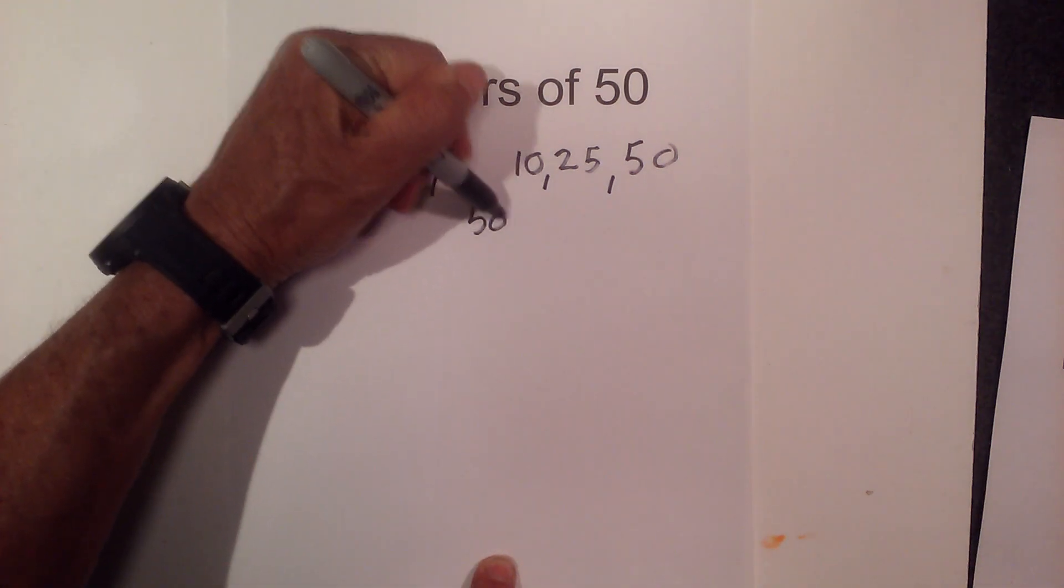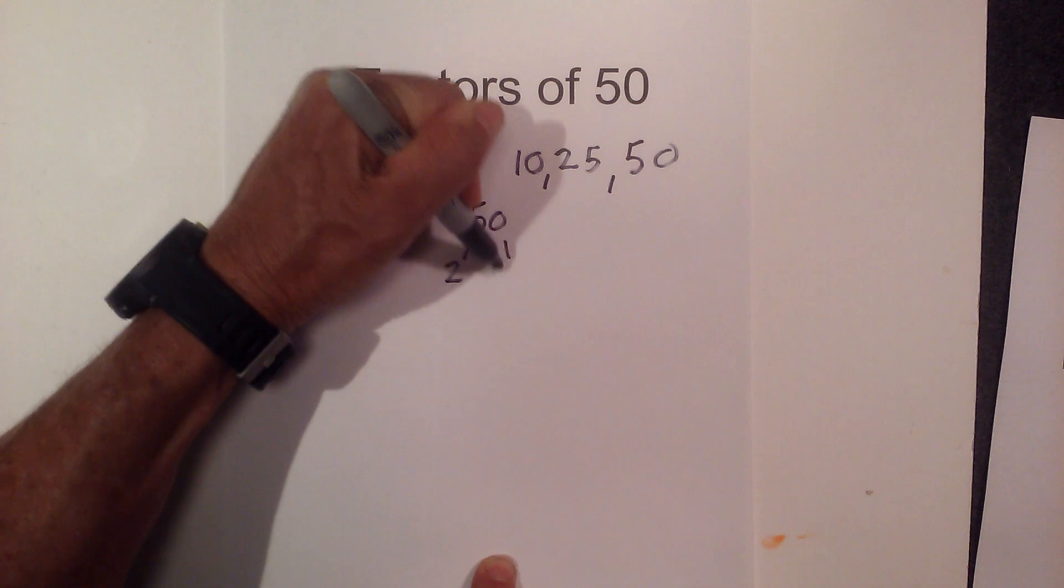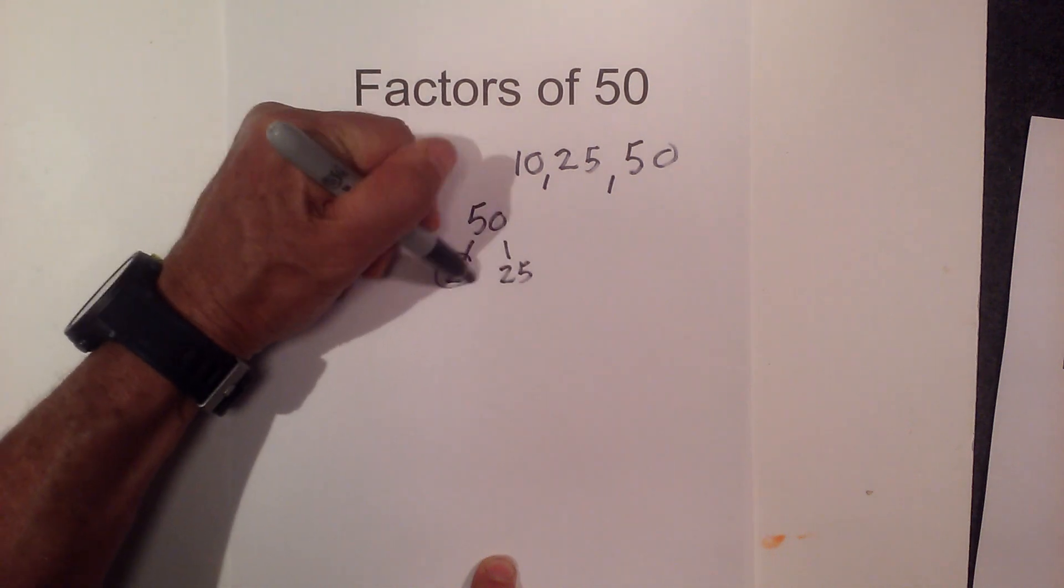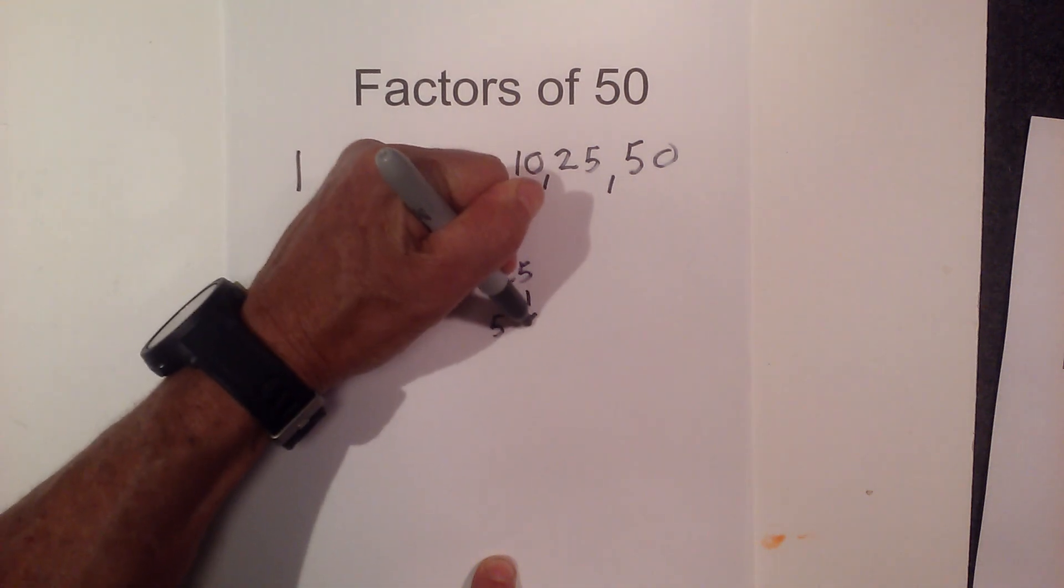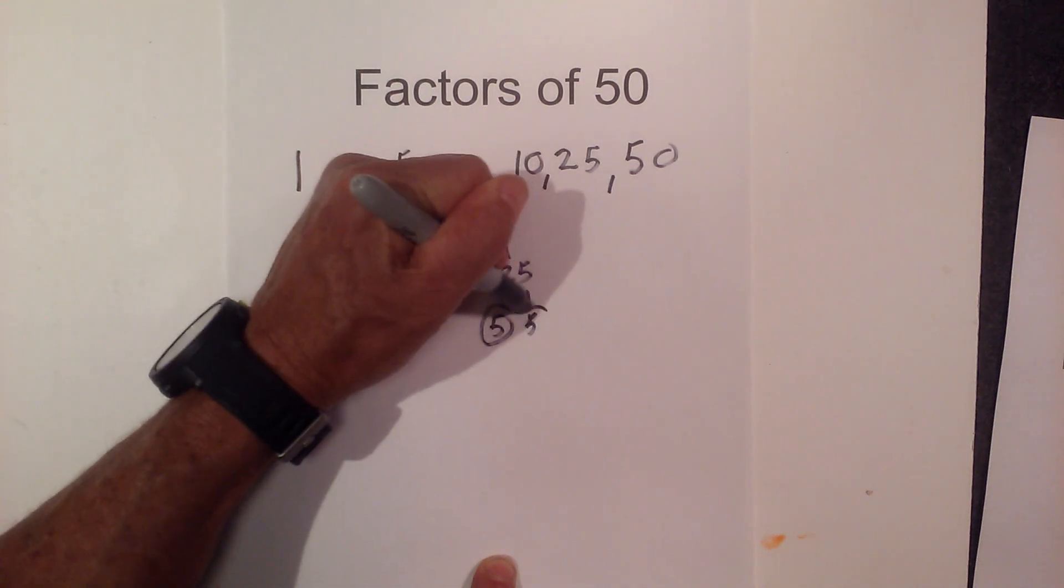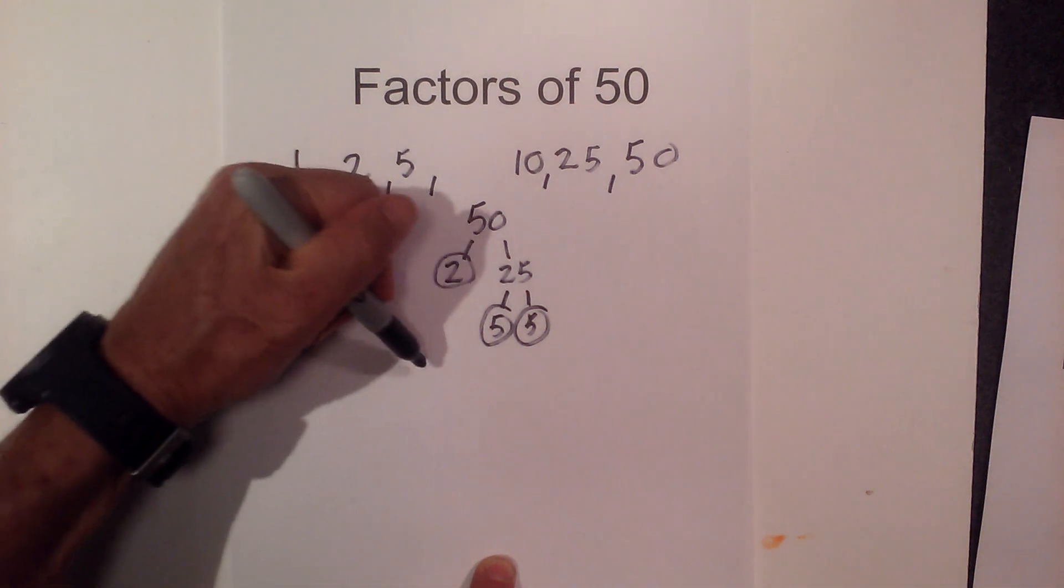Now let's find all the prime numbers for 50. 2 times 25, circles the 2 because it is prime. And then 5 times 5 equals 25, and they are both prime.